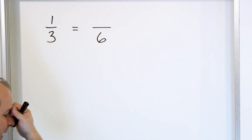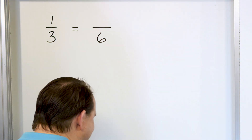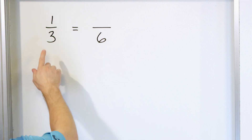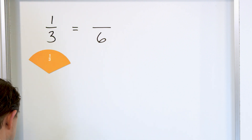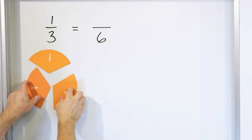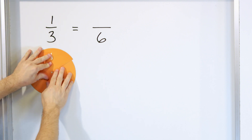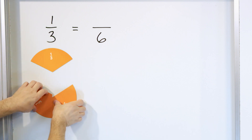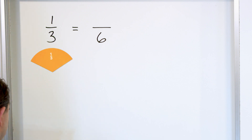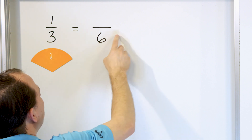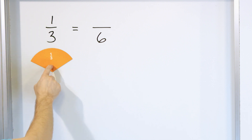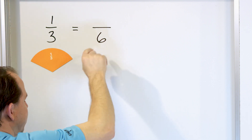Now, before we actually do it with math, I would like to do it graphically. So this fraction is called 1/3, right? Because if we think about a circle, and we can cut a circle into three equal pieces — that's what the denominator is — and if we only have one of those pieces, we have 1/3 of a pizza. What we're asking ourselves over here is what fraction is the same amount of pizza as this one, except has a 6 on the bottom?